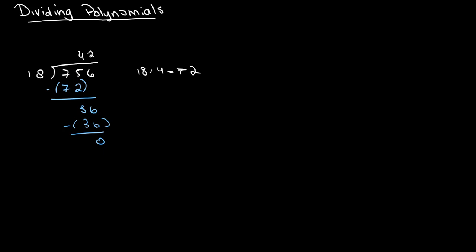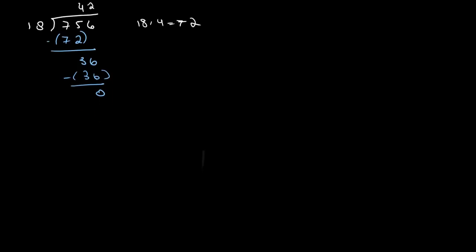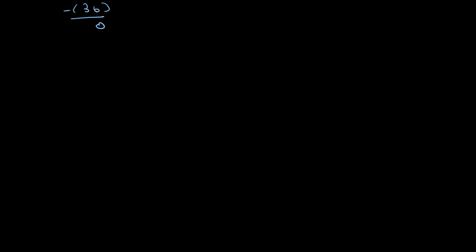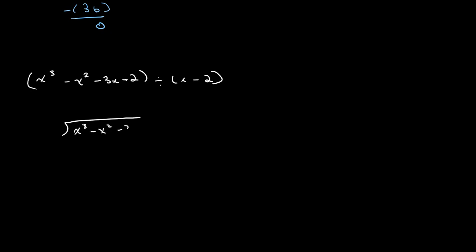When doing long division with polynomials, we'll be using a very similar technique. For example, let's say that we have x cubed minus x squared minus 3x plus 2, and we want to divide this by x minus 2. The first step is to write it out in our long division format: x cubed minus x squared minus 3x plus 2, divided by x minus 2.